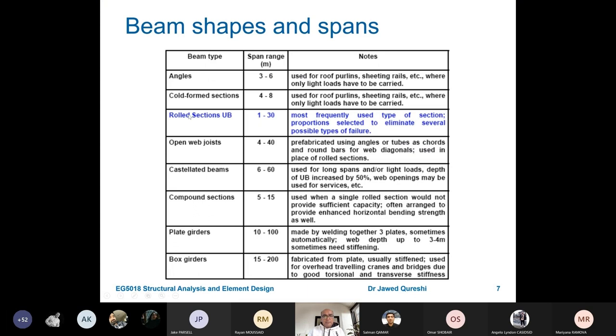Now here you can see that we can have many types of beams. Most common ones are rolled universal beams which can span between 1 to 30 meters, but most of the time we do not actually go beyond probably 10-15 meters. If it is beyond 20 meters, I think we consider using trusses.